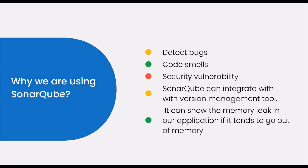SonarQube can also easily integrate with version management tools like SVN and GitHub, analyzing code from there. It can also detect memory leaks — if we are writing code and not closing resources, in certain scenarios it will detect those situations and flag the potential exceptions. These are all benefits of using SonarQube.